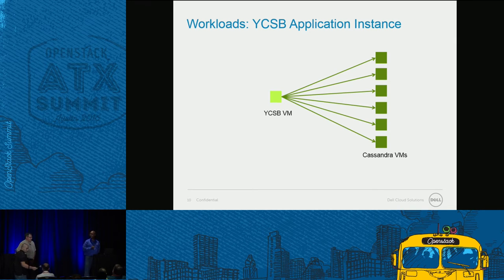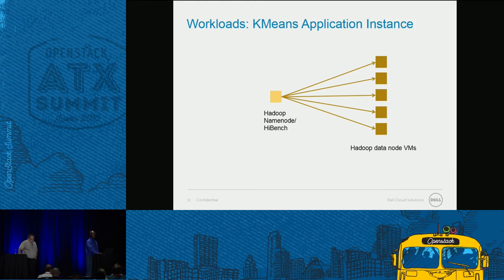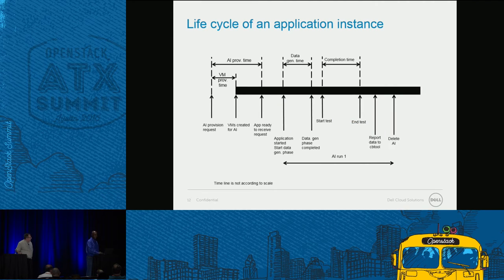YCSB is the Yahoo Cloud Benchmark and will scale out in clouds. A YCSB application instance literally has six Cassandra seed nodes and also a YCSB instance — seven instances total. K-Means runs off Hadoop; we are using the Intel HiBench version, and it has one name node and then five instances.